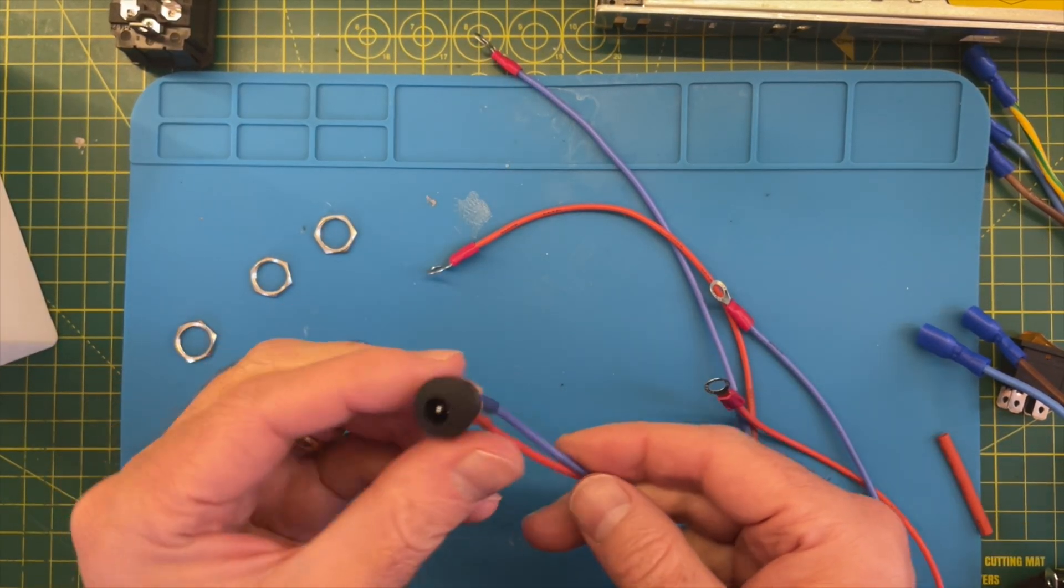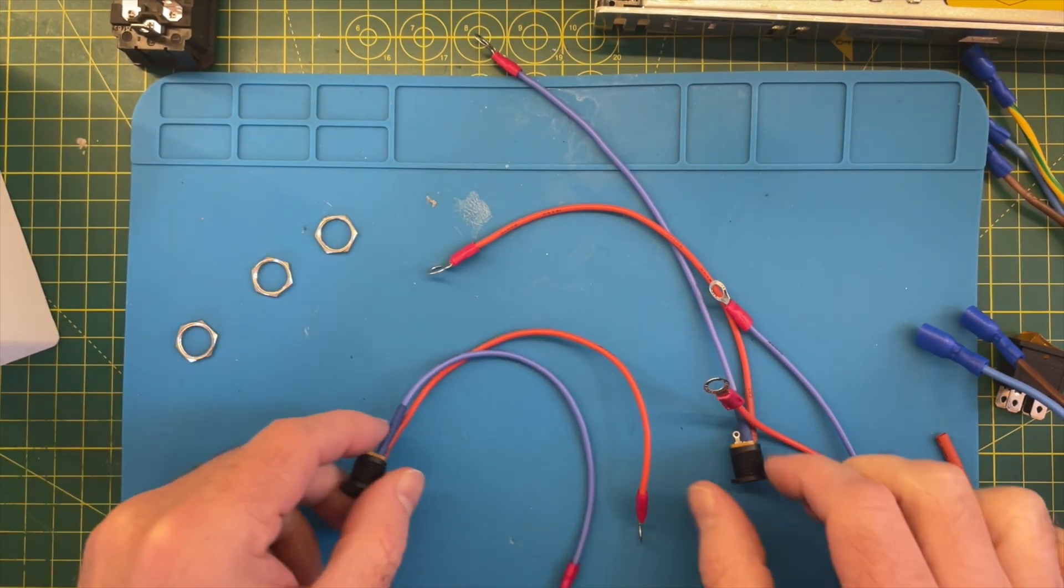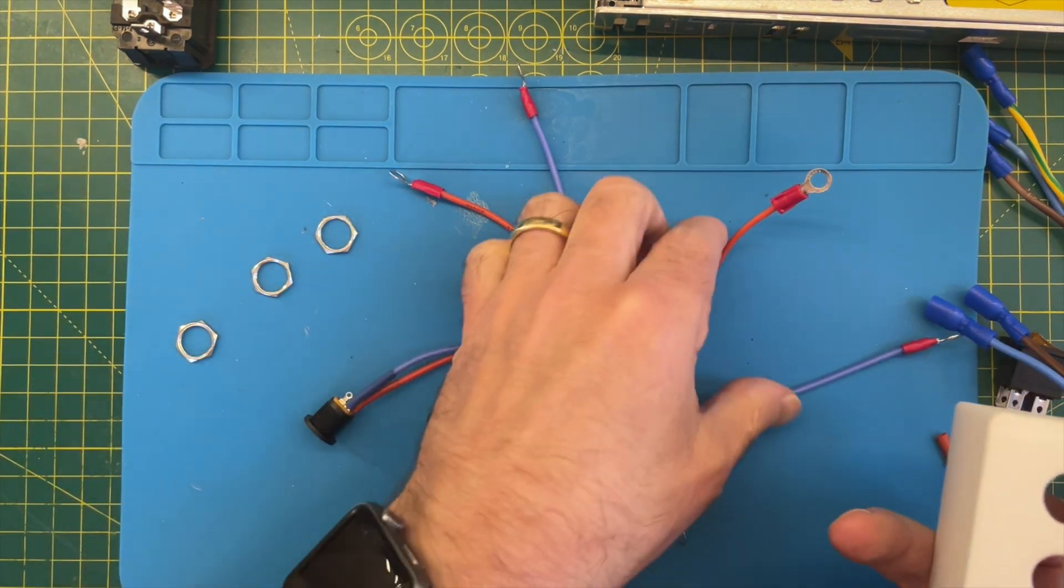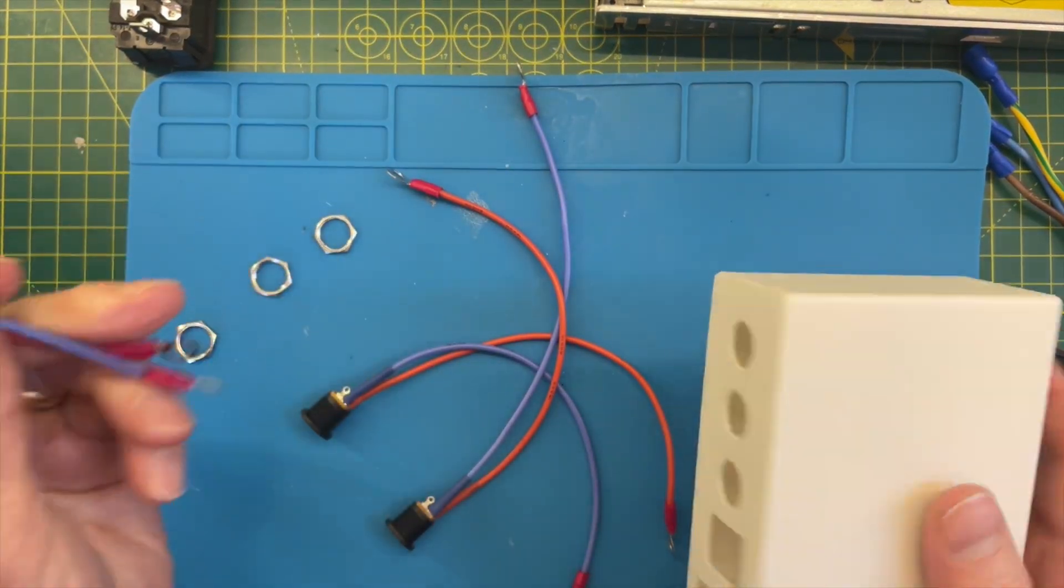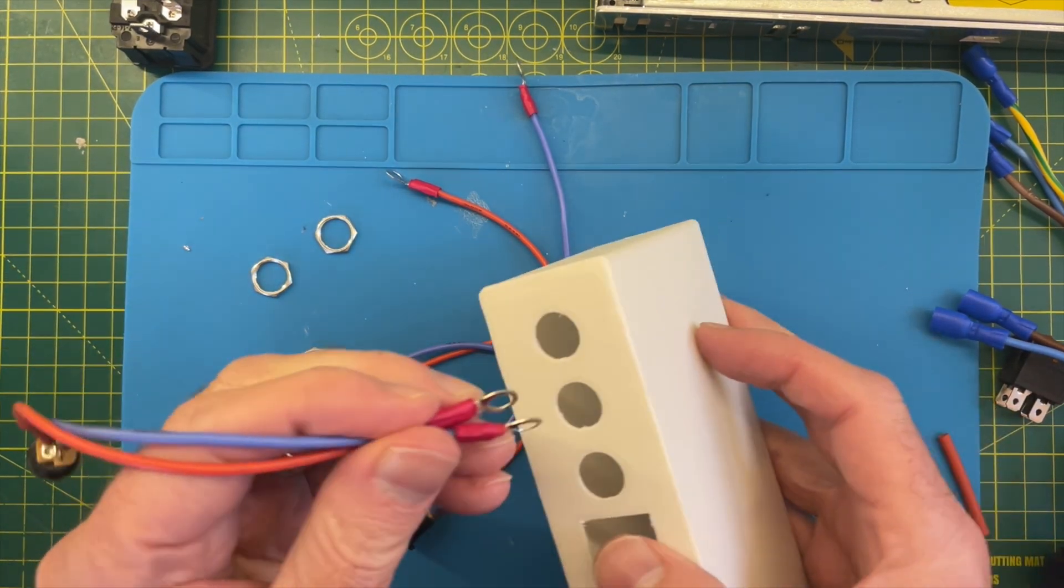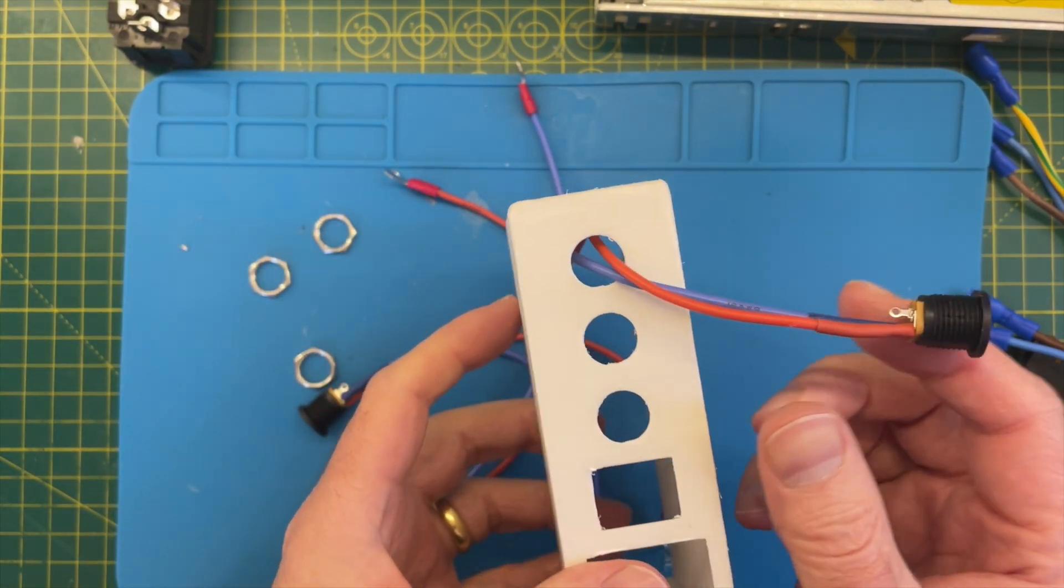So that's these sockets nicely wired up. I only forgot the heat shrink maybe five times and had to redo them, but they're all done now. So now it's just a case of throwing these wires through and then bolting these sockets on. I'll do that now. I won't force you to watch that quite painful process because it's going to be a bit fiddly.